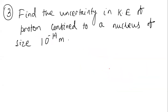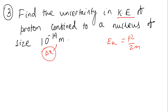The third question: find the uncertainty in kinetic energy of a proton confined to a nucleus. The kinetic energy is EK = p²/(2m). The nucleus size gives us Δx = 10⁻¹⁴ m as the maximum uncertainty in position.